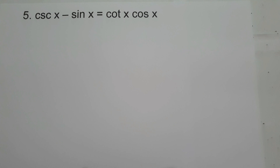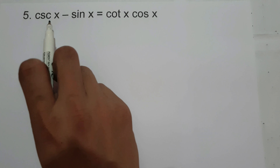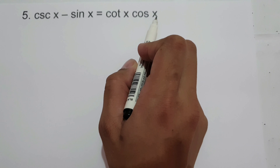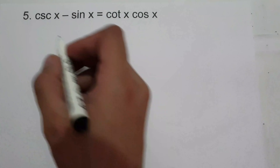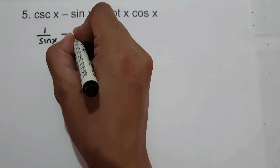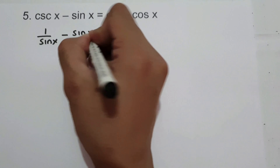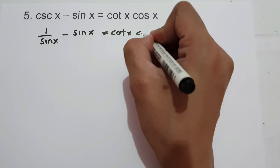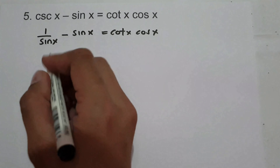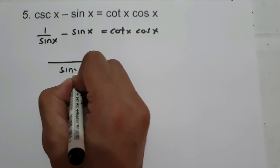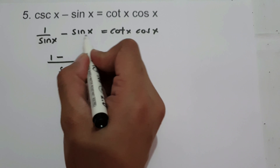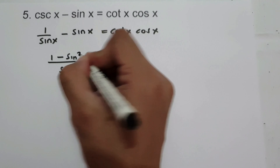On example number 5, we are going to prove cosecant x minus sine x equals cotangent x times cosine x. So to prove the given identity, let us change cosecant x as 1 over sine x, and let us write negative sine x equals cotangent x times cosine x. Since we have sine x as our denominator, so let us write sine x. And let us have 1 minus sine x times sine x, that is sine squared x.